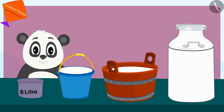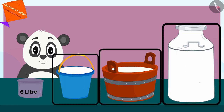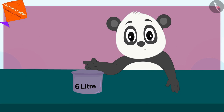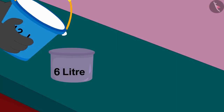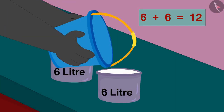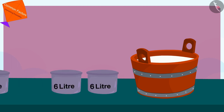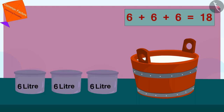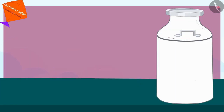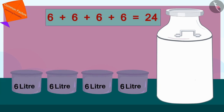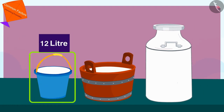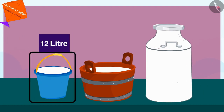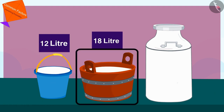Golu began measuring the milk filled in all those pots with a 6-liter vessel. To measure the milk in the first vessel, Golu used the 6-liter pot twice. For the second pot he used the 6-liter pot three times, and to measure the milk in the third pot, Golu used his 6-liter vessel four times.